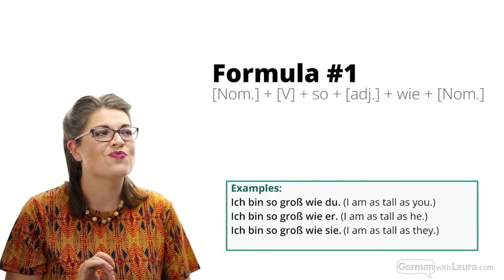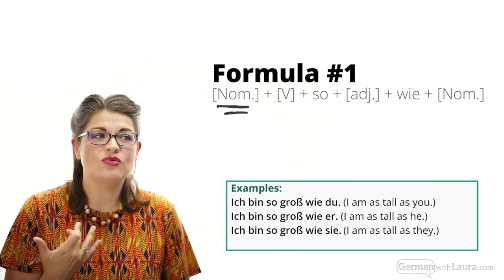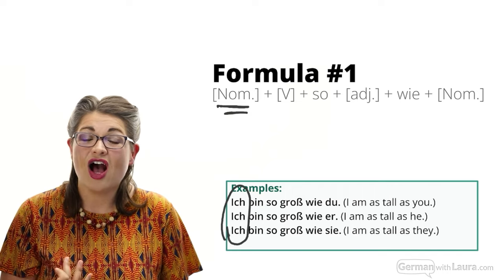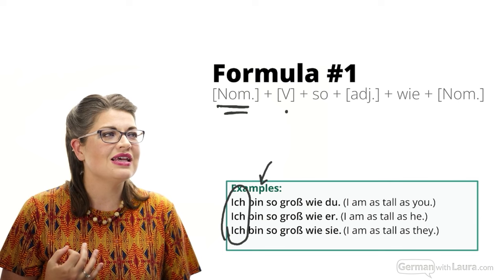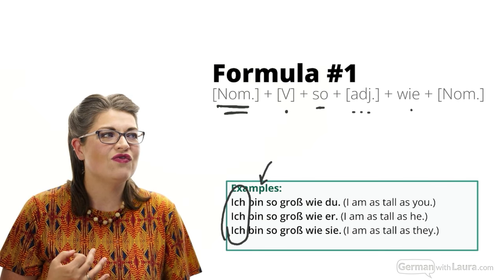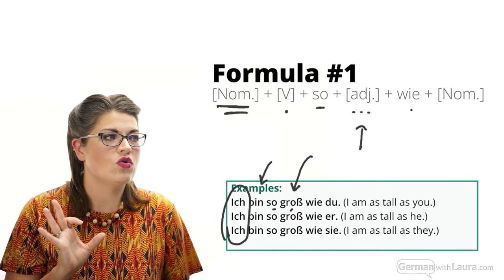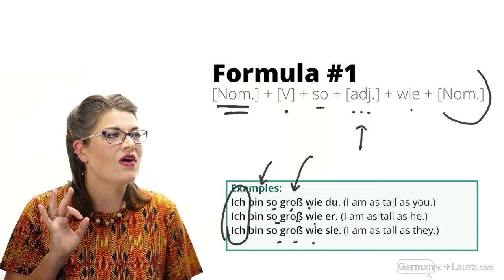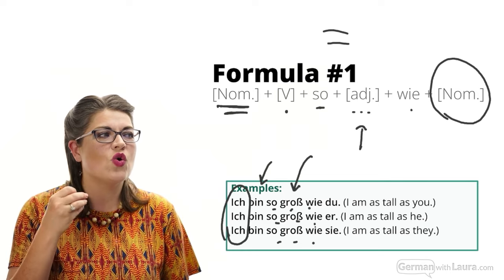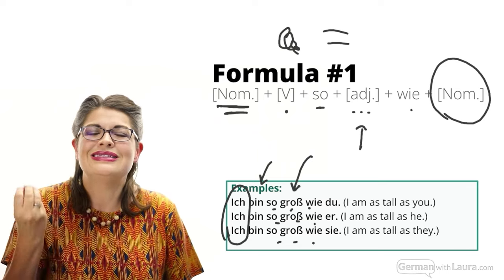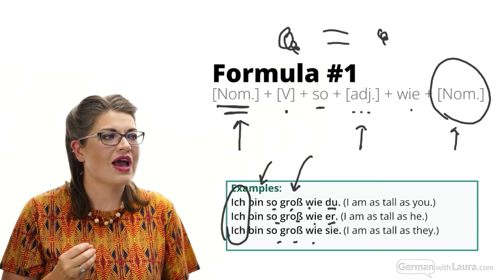Let's look at some formulas to help. For the equal comparison formula, we start with a subject noun in the nominative case — here the pronoun 'ich.' Then a conjugated verb, then 'so,' then an adjective, then 'wie.' You can see it repeated: 'so groß wie,' 'so groß wie,' 'so groß wie.' The final component after 'wie' is also nominative case, because an equal comparison is like an equal sign — both sides must match.